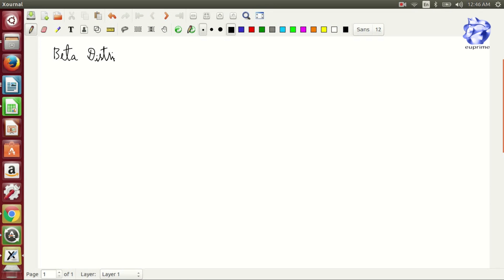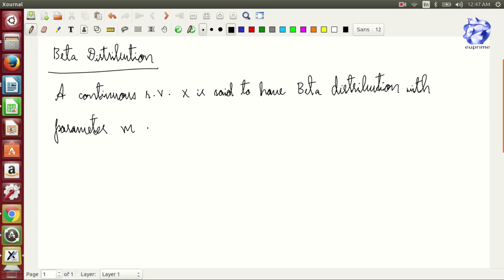Today we are going to discuss beta distribution. There are two kinds of beta distribution. Beta distribution of first kind: a continuous random variable X is set to have beta distribution with parameter m and n if the probability density function is: